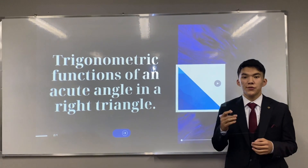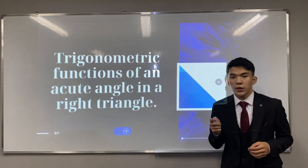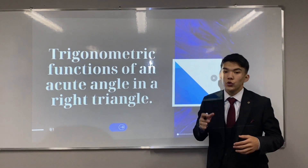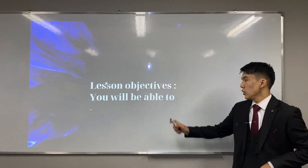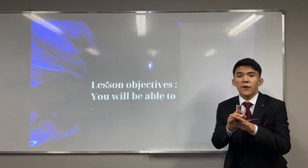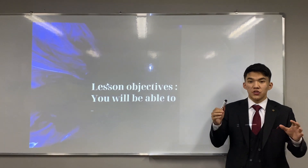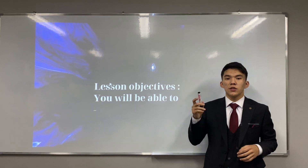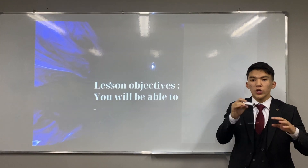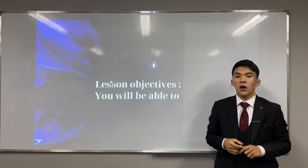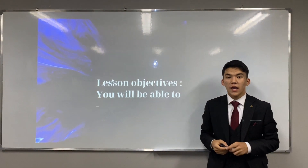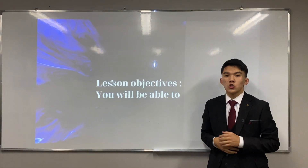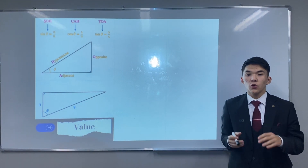As you know, in the last lesson I explained right triangles and their properties. Today's topic is the trigonometric function of an acute angle in the right triangle, and using the Pythagorean theorem. After this lesson, you will be able to easily find an unknown angle measure in a right triangle using sine, cosine, and tangent ratios and their inverse functions, and apply problems using the triangle.